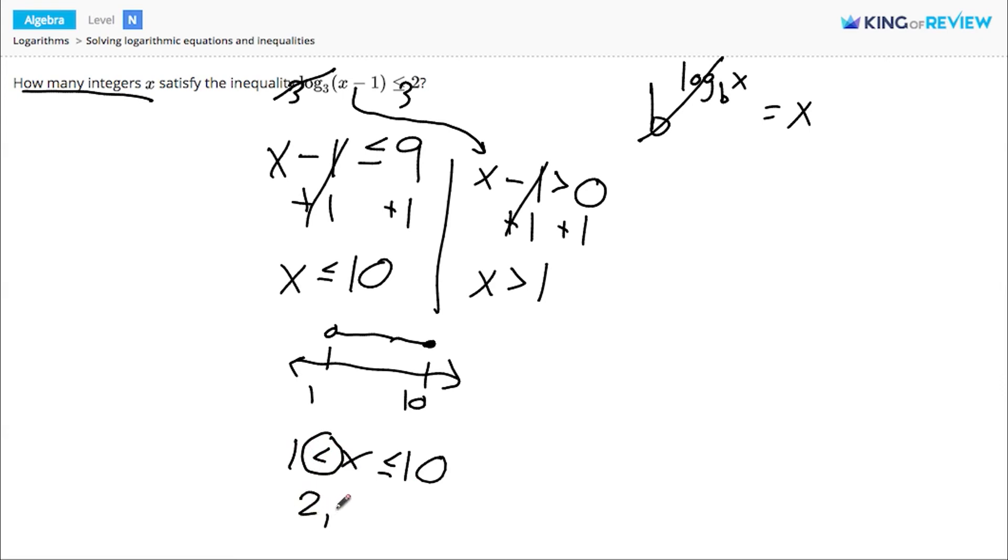And then if we count all the integers in between there and 10, notice we can include 10 because this is less than or equal to 10, we see that there are, in total, 9 integers in that interval.